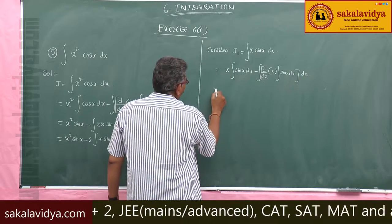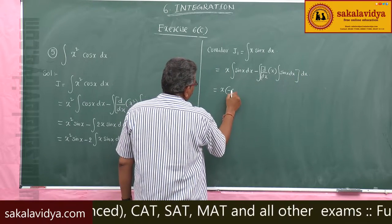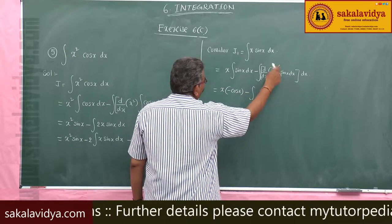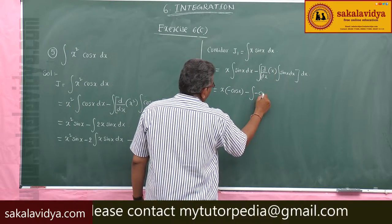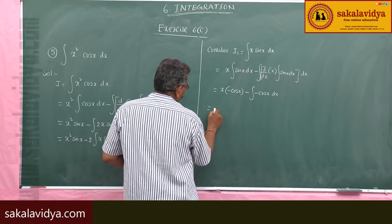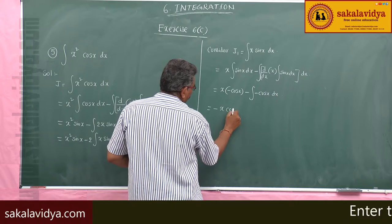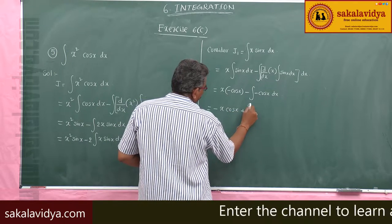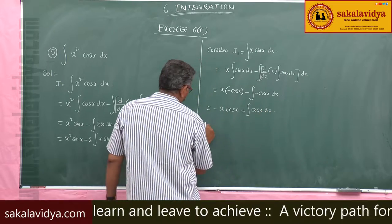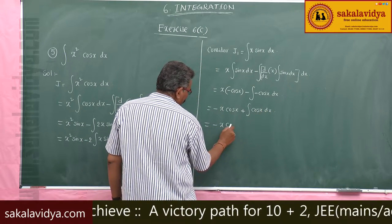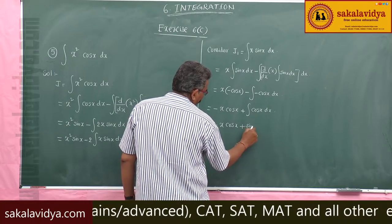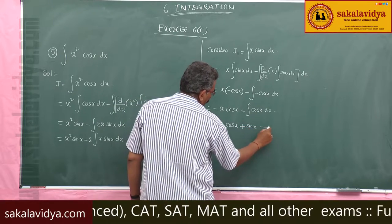Now, x times minus cos(x), and minus the derivative of x which is 1, times minus cos(x) dx. This simplifies to minus x cos(x) plus the integral of cos(x) dx, giving minus x cos(x) plus sin(x). We call this equation 2.